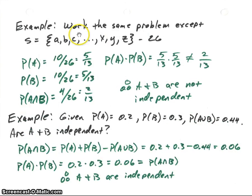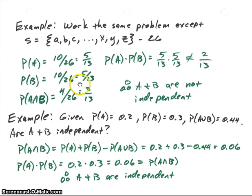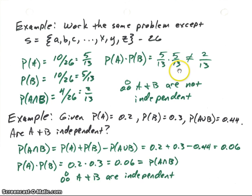Now let's do the same problem except we'll throw Z in — Z is now part of the sample space. It's going to seem weird that this would really affect things, but it will. The probability of A is again 10 elements, but now there are 26 total, so that becomes 5/13. B also has 10/26, so its probability is 5/13. The intersection still has four elements, but the probability is 4/26, or 2/13. Now let's look at probability of A times probability of B: 5/13 times 5/13. You can see that is not going to equal 2/13, and so therefore A and B are not independent. We didn't really change the sets at all — we just changed the sample space.